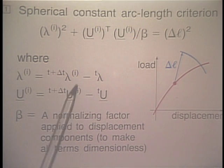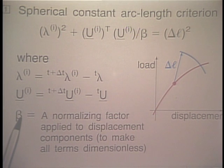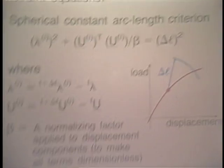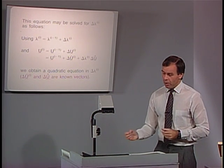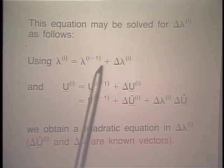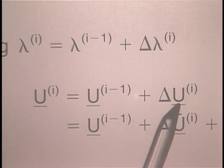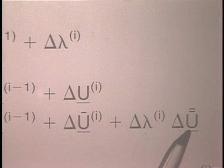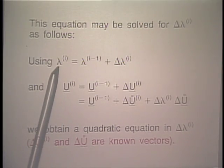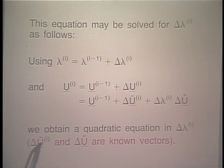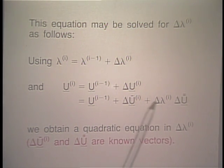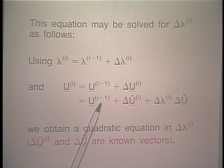With the definitions in place — β as a normalizing factor to make terms dimensionless — the equation may be solved as follows. Using that λ_i equals this expression and u_i is given accordingly, substituting into the constraint equation, we directly obtain a quadratic equation in δλ_i. The two vectors involved are known from the current and previous iterations.